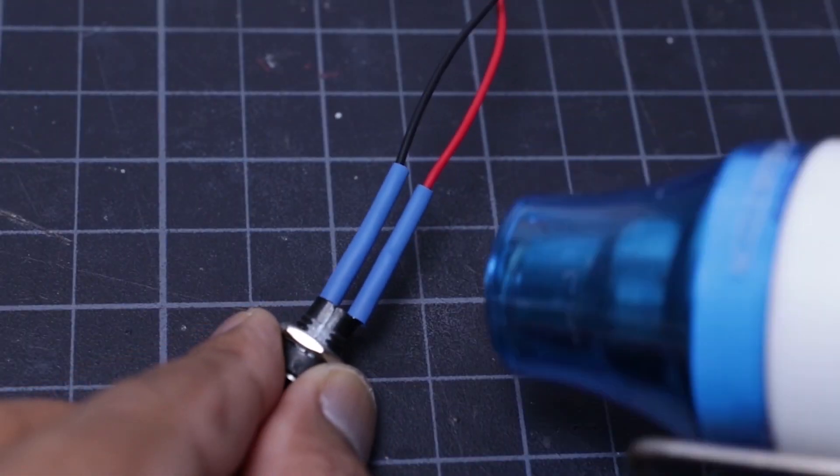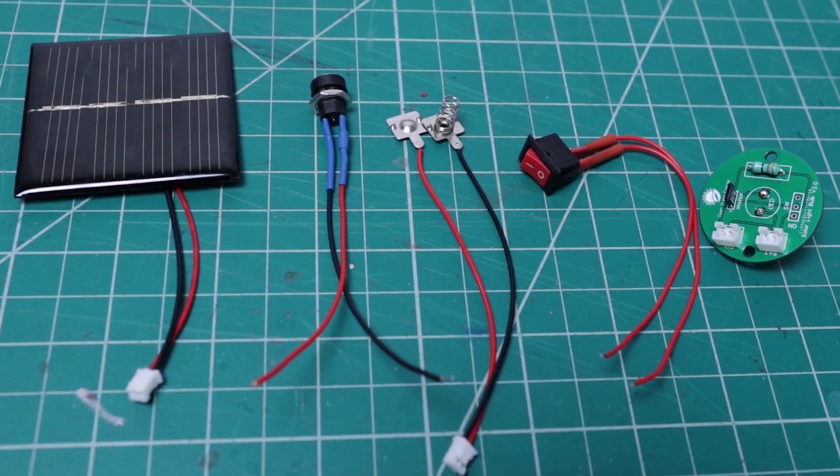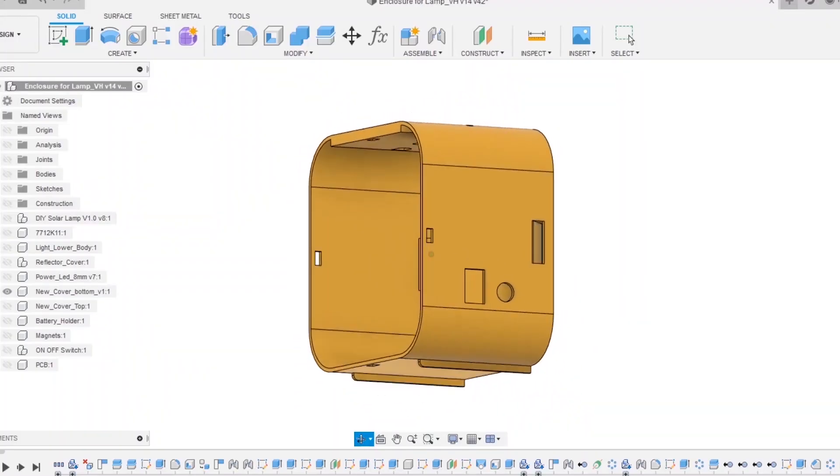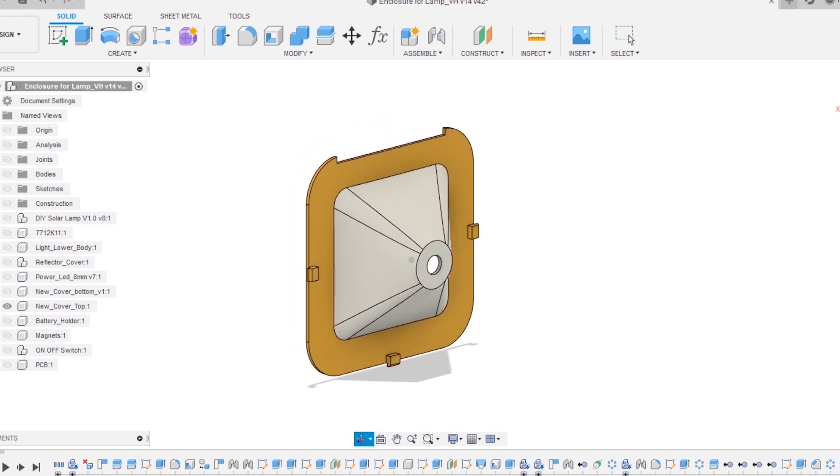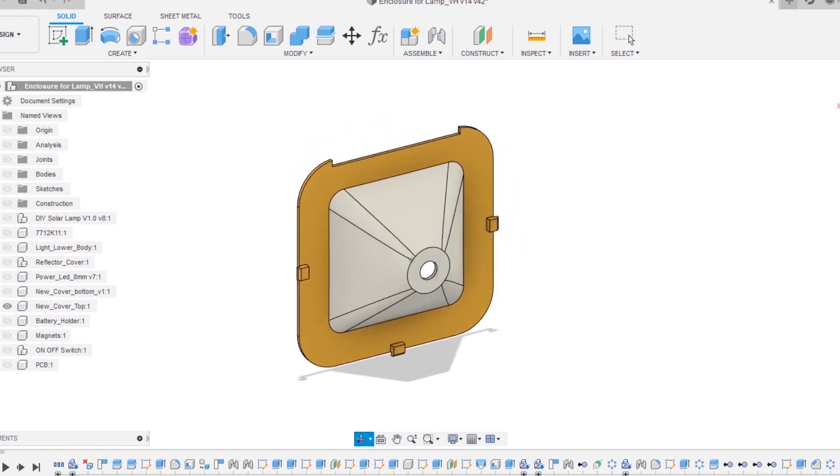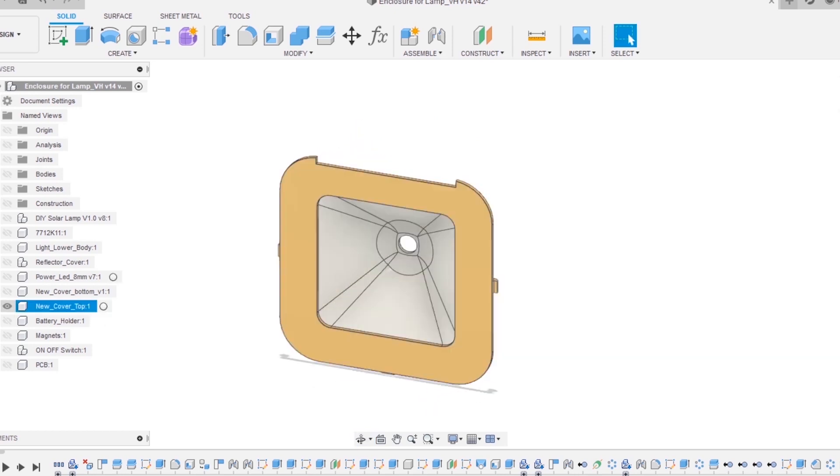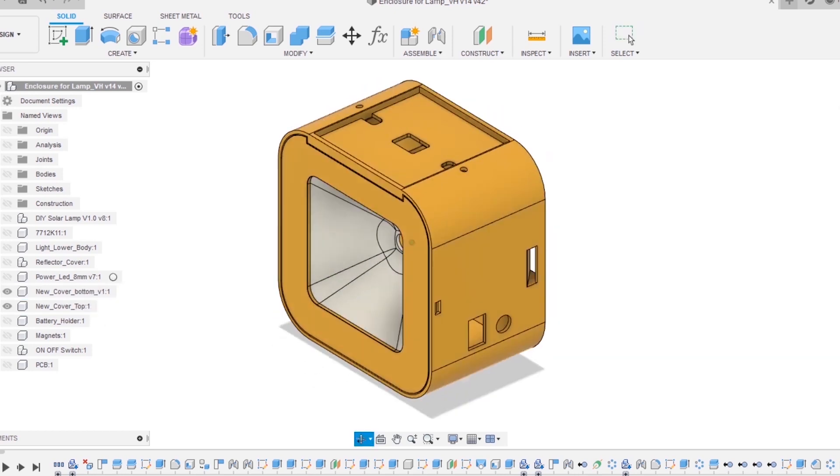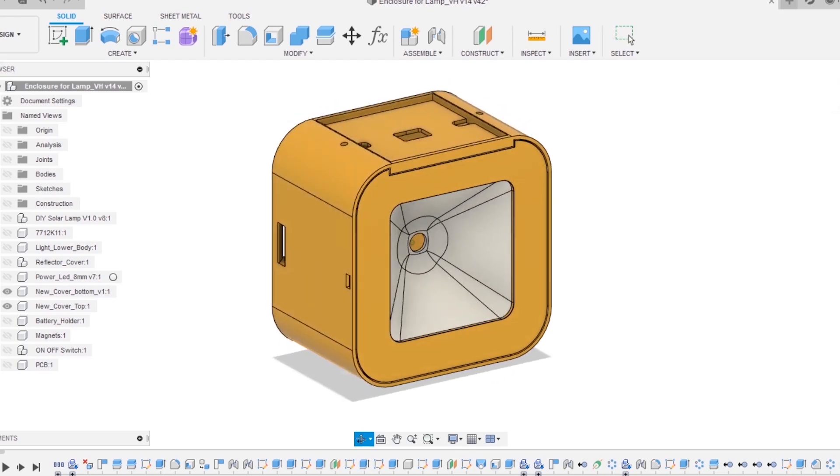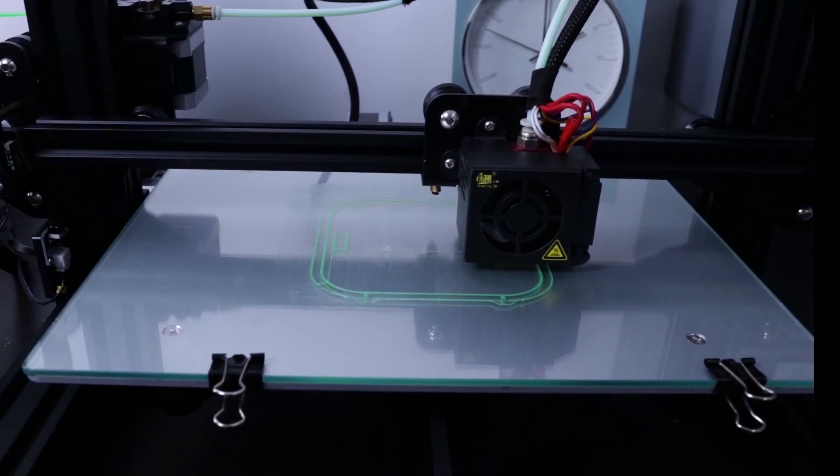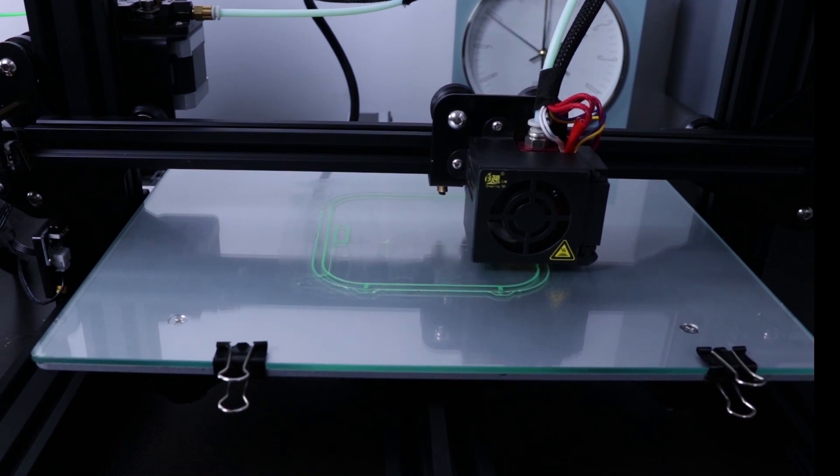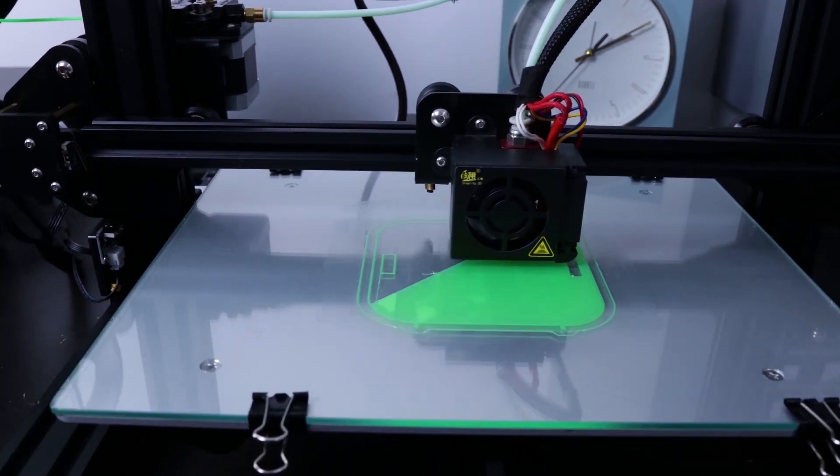Now our PCB along with all the other components are ready for assembling into the enclosure. The nice 3D printed enclosure for this lamp is designed by my friend Varun in Autodesk Fusion 360. The enclosure has two parts: the main body part and the front reflector part. I have printed the main body with green color PLA and the reflector part with white color PLA.